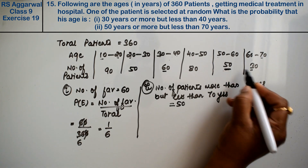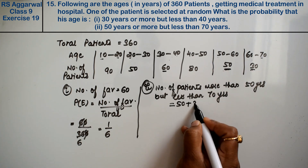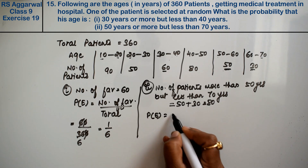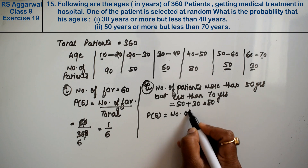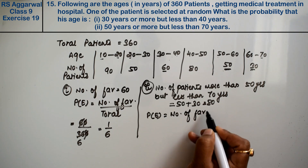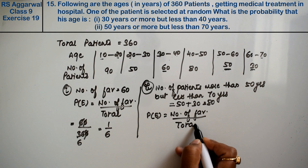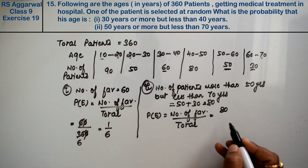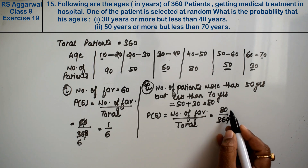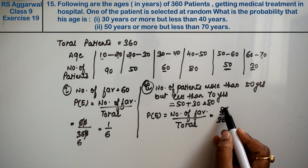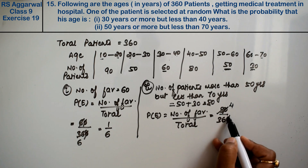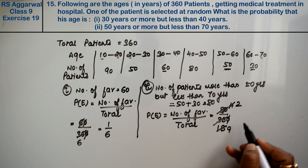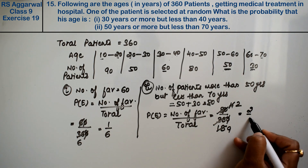Number of patients more than 50 but less than 70 years: 50 plus 30 equals 80. Probability equals number of favourable divided by total, which is 80 divided by 360. Simplifying: 2 upon 9 is the answer.